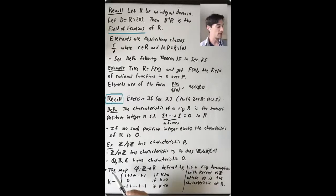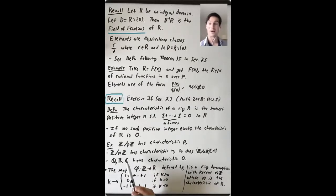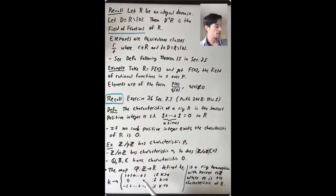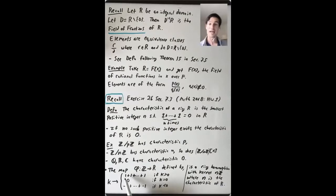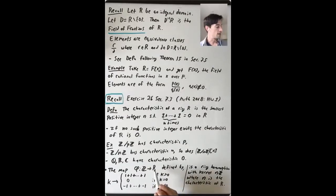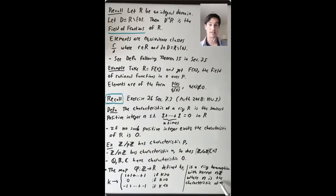One of the things you prove in this exercise is that there's a map from Z to R defined by sending k to k times the multiplicative identity of R (interpreted as repeated addition or its additive inverse for negative k). You show this is a ring homomorphism and that the kernel is nZ, where n is the characteristic of R. Another part of this exercise concerns the case where p is prime and R has characteristic p: you show using the binomial theorem that (a + b)^p = a^p + b^p in R. This ends up being useful on homework 2, where you consider factoring x^p − 1 in Fp[x] by writing x^p − 1 = (x − 1)^p.